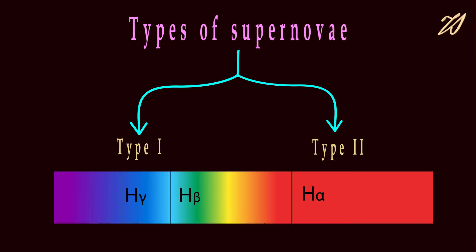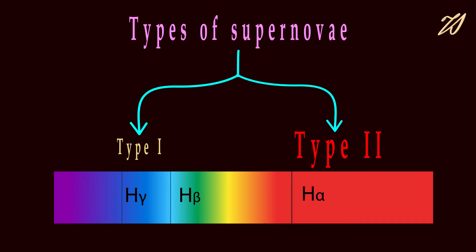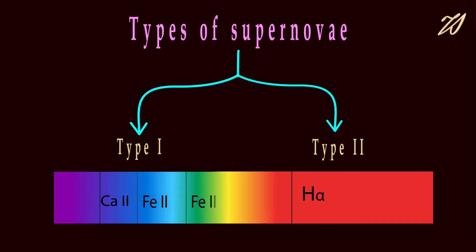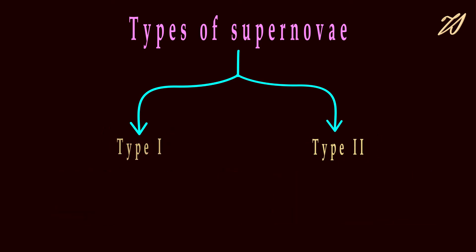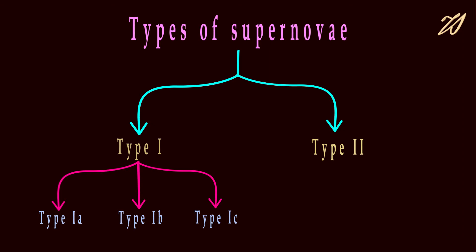If there are hydrogen lines in their spectrum, it is a type 2 supernovae. Whereas, if hydrogen lines are missing, it is type 1 supernovae. Type 1 can be further classified as type 1A, 1B, and 1C. Let's see one by one.